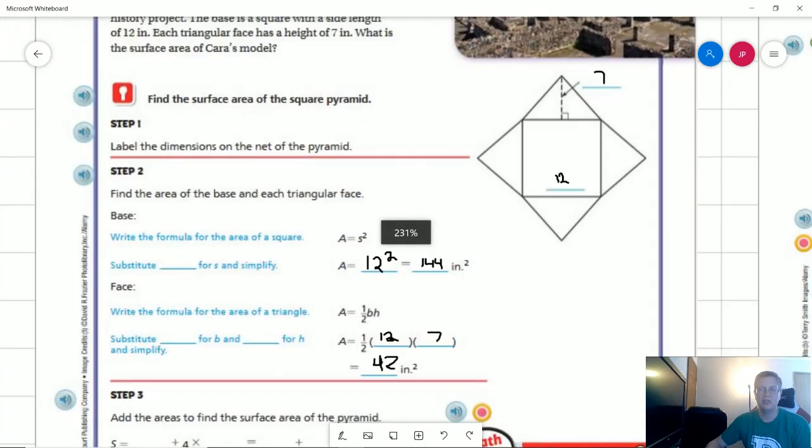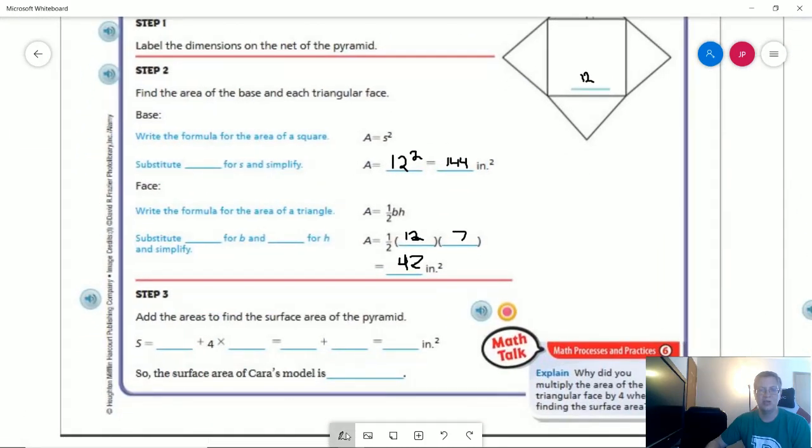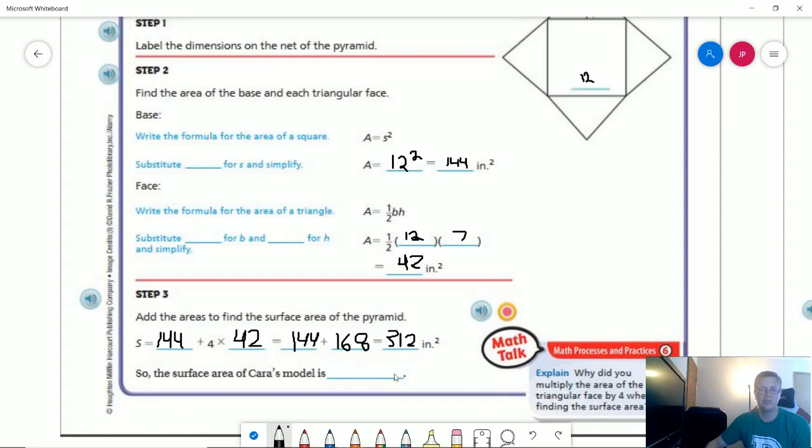And then now as we move to our last step, we are going to have 144 plus 4 times 42, which is going to give us 144 plus 168, and then that should give us 312 inches squared. That would be the surface area of our model.